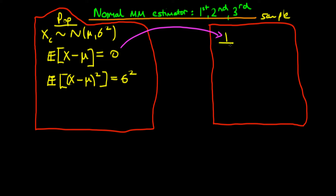So this first expectation just becomes one over n times the sum from i equals one to n of x_i minus mu hat, where mu hat is our method of moments estimator. We set that equal to zero. So the first method of moments estimator is defined by the solutions to this equation — whatever mu hat solves this equation is our method of moments estimator for mu.